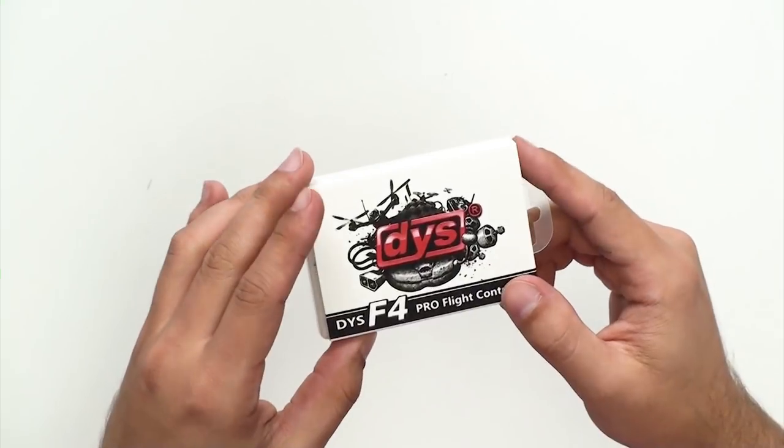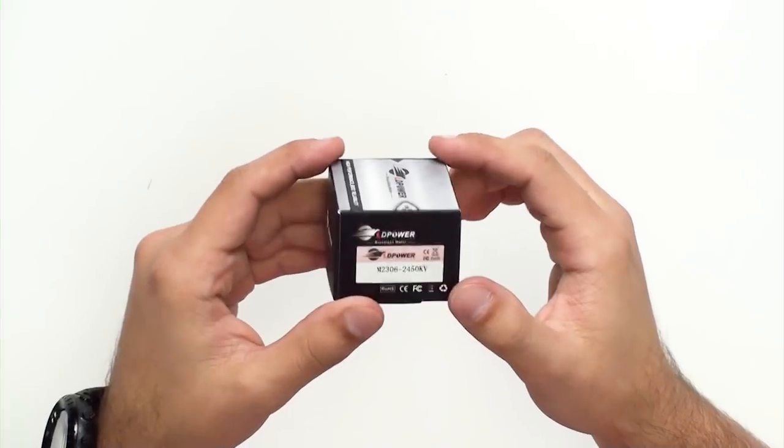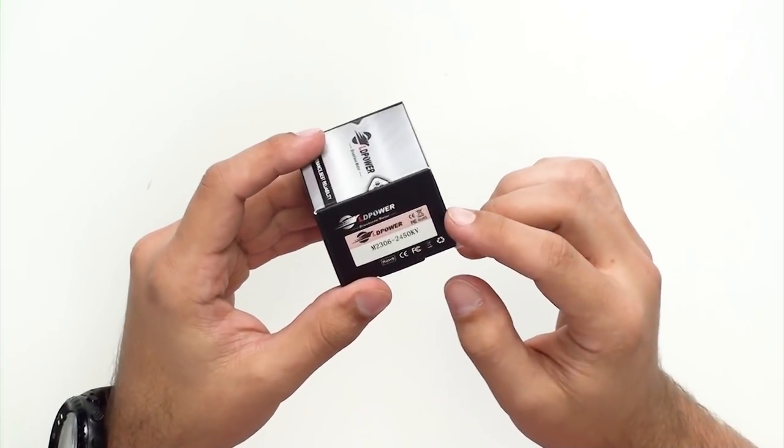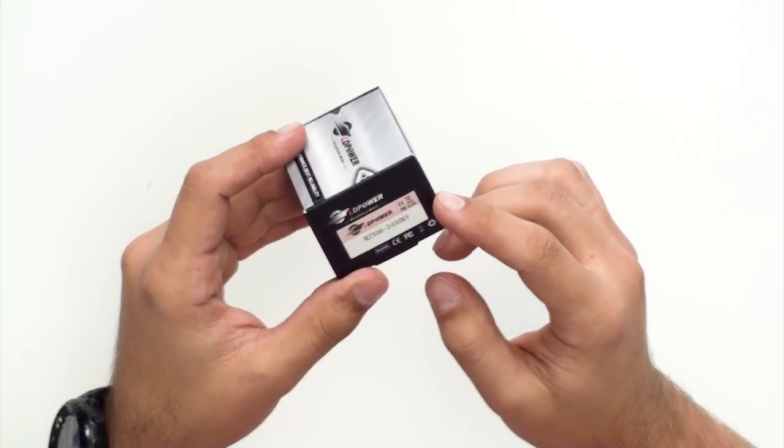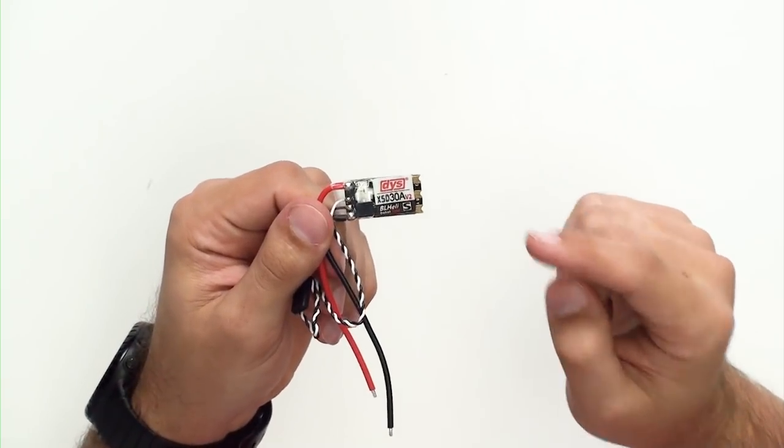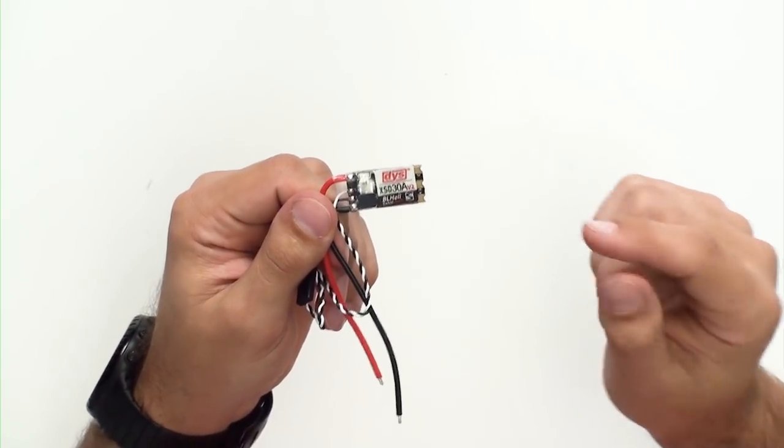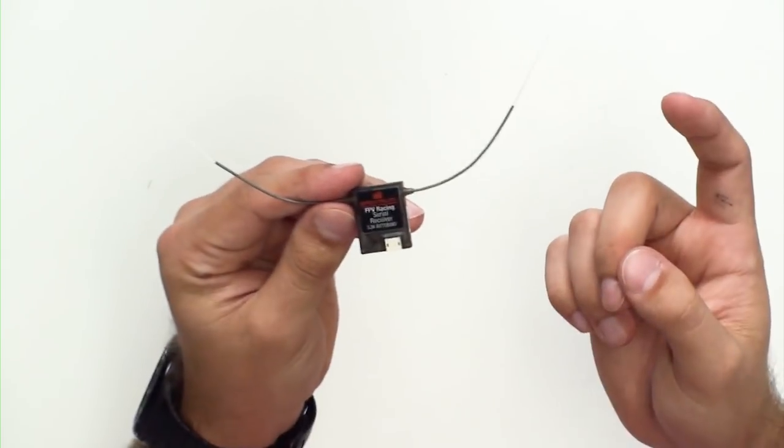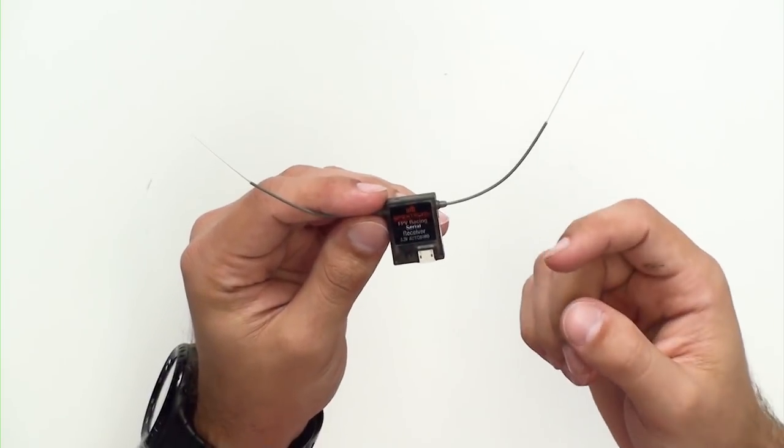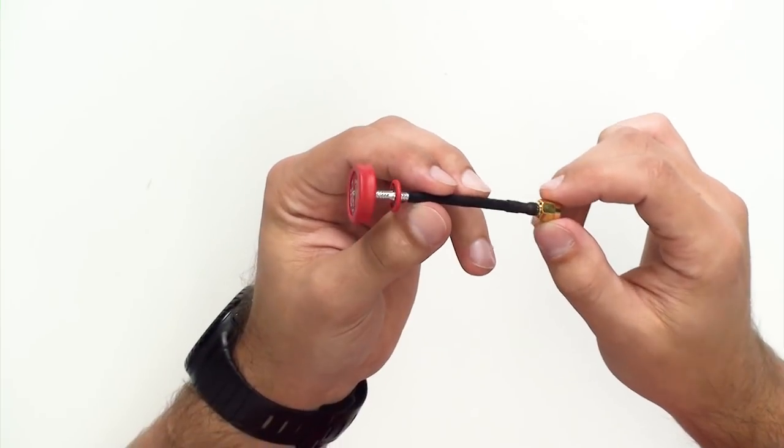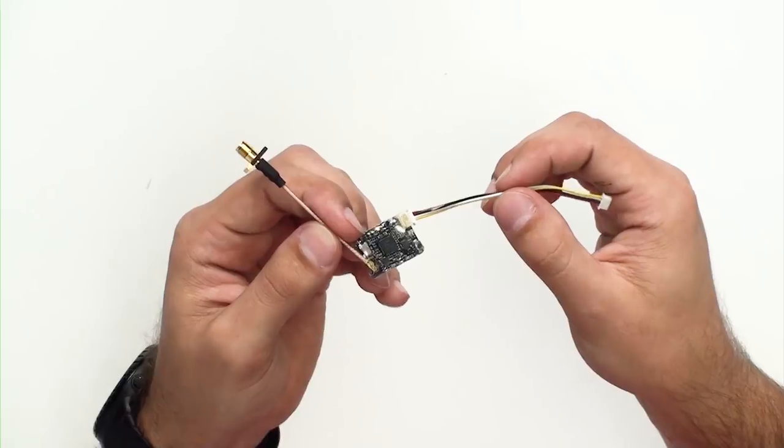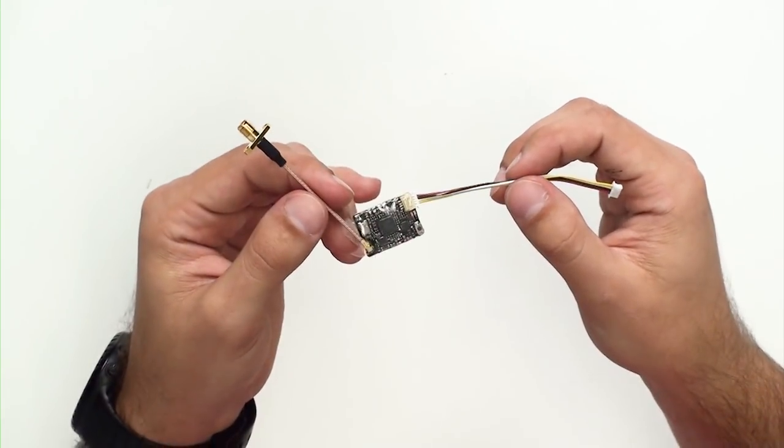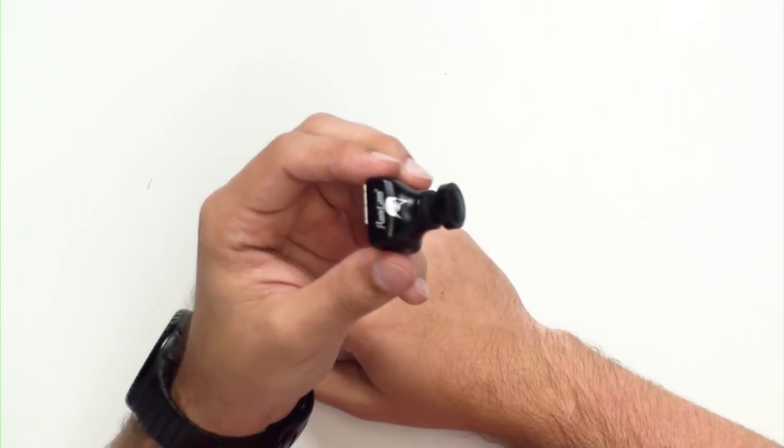For this build, the parts we're going to be using are a DYS F4 Pro Flight Controller Board, LD Power Motors M2306 2450 KV, DYS 30 Amp BLHeli_S D-Shot Compatible ESCs, Spectrum Receiver or you could use an FrSky XSR instead, Emax Pagoda 2 VTX Antenna, TBS Unify Pro VTX, and a Runcam Eagle FPV camera.